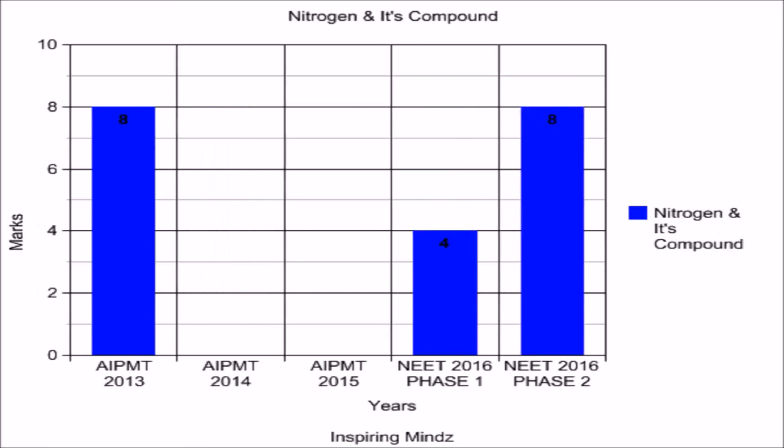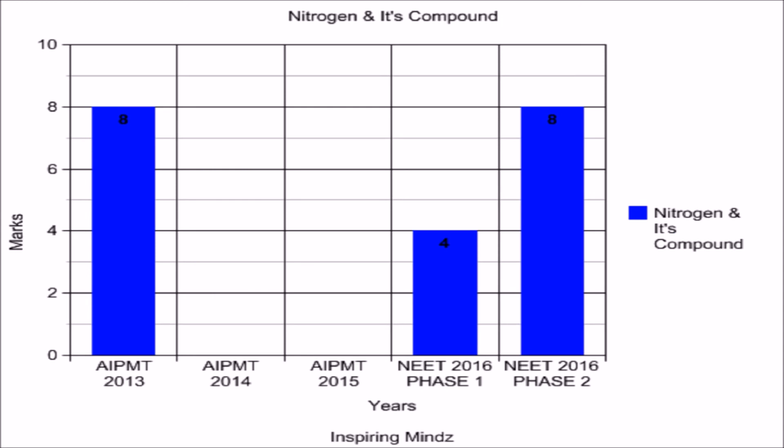For Nomenclature: in AIPMT 2013 and NEET 2016 phase 2, the weightage for this chapter was 8 marks, which reduced to 4 marks in NEET 2016 phase 1. In AIPMT 2014, no questions were asked from this chapter.